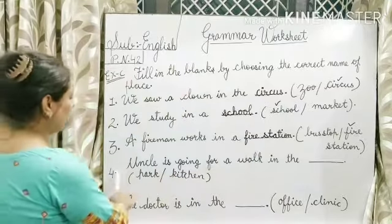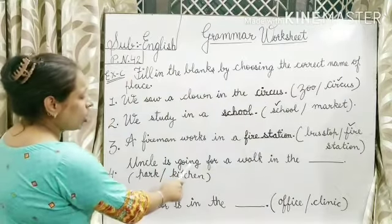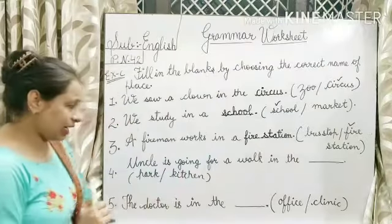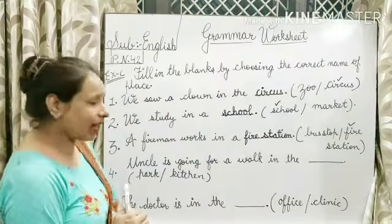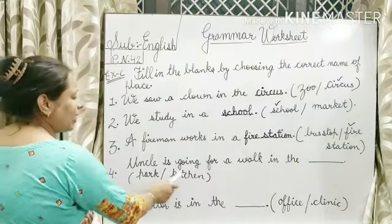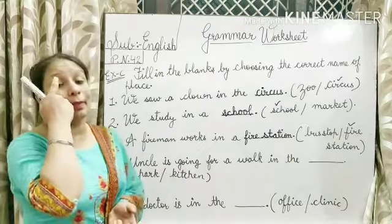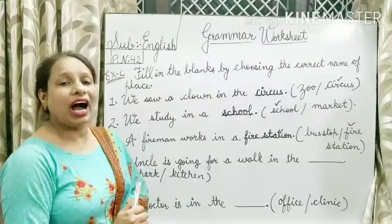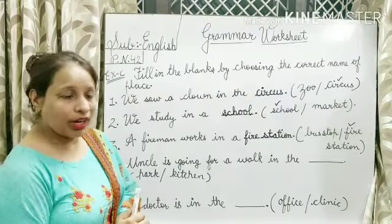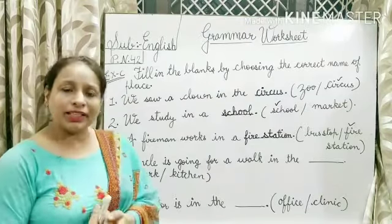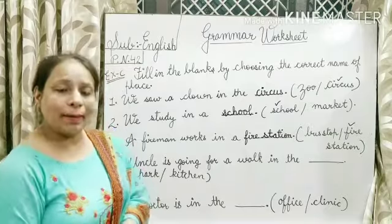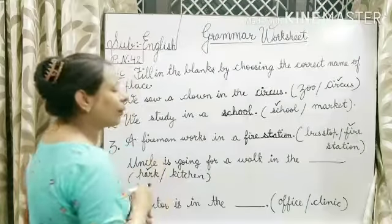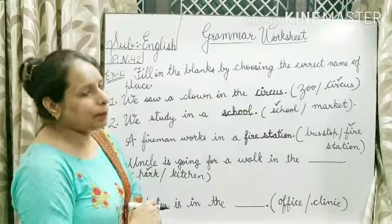Coming to the fourth one. Uncle is going for a walk in the blank. Uncle ja raha hai walk karne — walk karna matlab walk karna, kahan pe? Park mein ya kitchen mein? Aapke baap kabhi bhi raat ko khana khane ke baad kitchen mein walk karne nahi jaate. Toh obviously walk karne jaate hain park mein. So the answer is park. P-A-R-K, park.